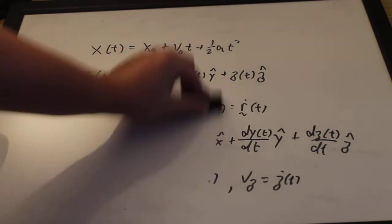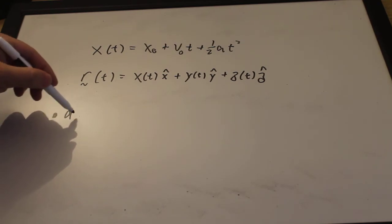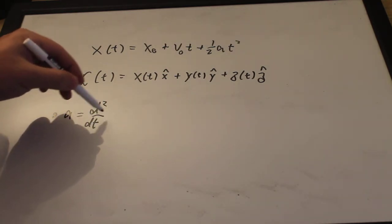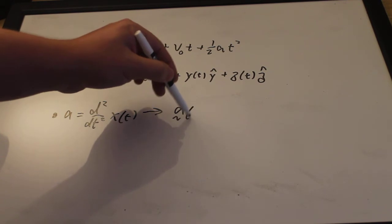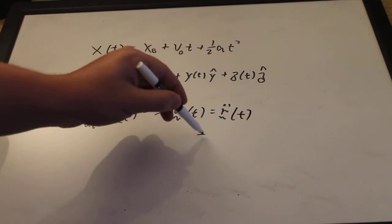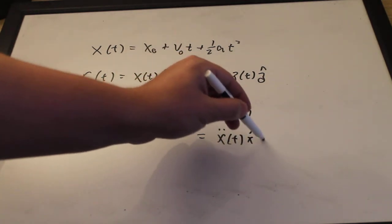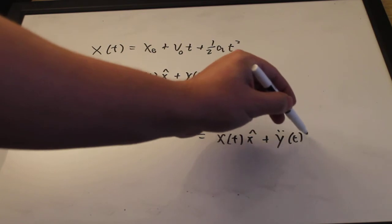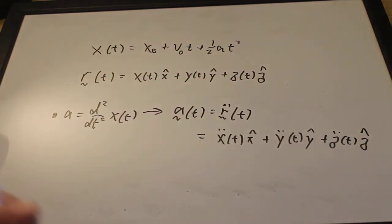So we can write that the x component of the velocity is the derivative of the x equation, and then for y, time derivative, and z. Pretty simple. Now for acceleration, using the same analog, our acceleration in one dimension is the second derivative of the position. So in three dimensions, the acceleration vector is the second derivative of the position.